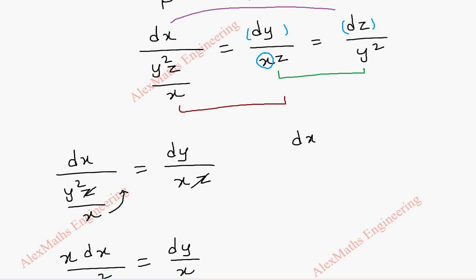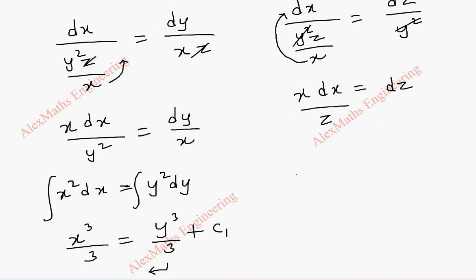Now, I take first term and the last term. So, here we can cancel this. Then, this x will be carried to the numerator. So, it is x dx equal to and this z, right now it is here. But, I can carry it to the other side by the cross multiplication. So, we get in the variable separable form, x dx equal to z dz. So, now we can integrate on both the sides.